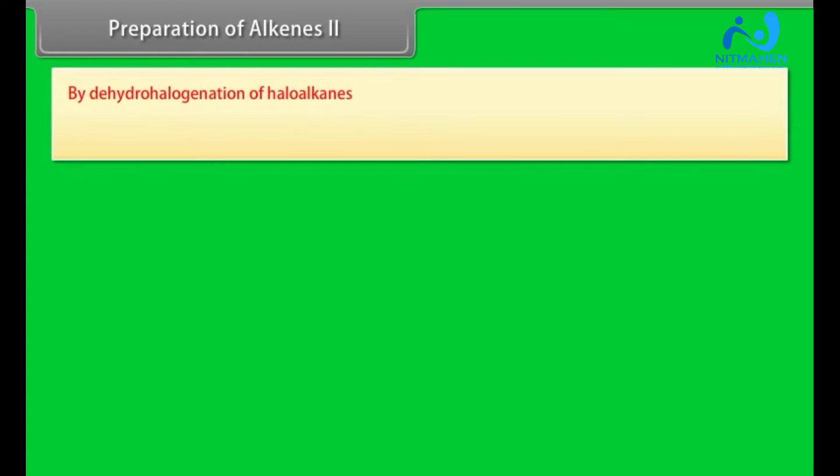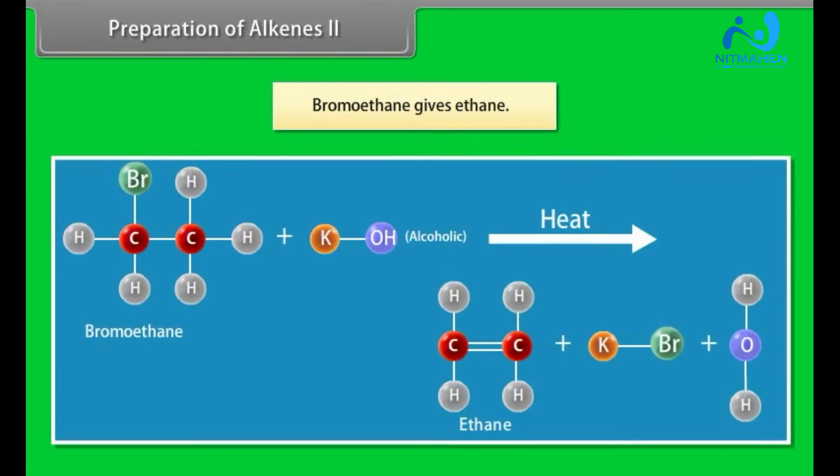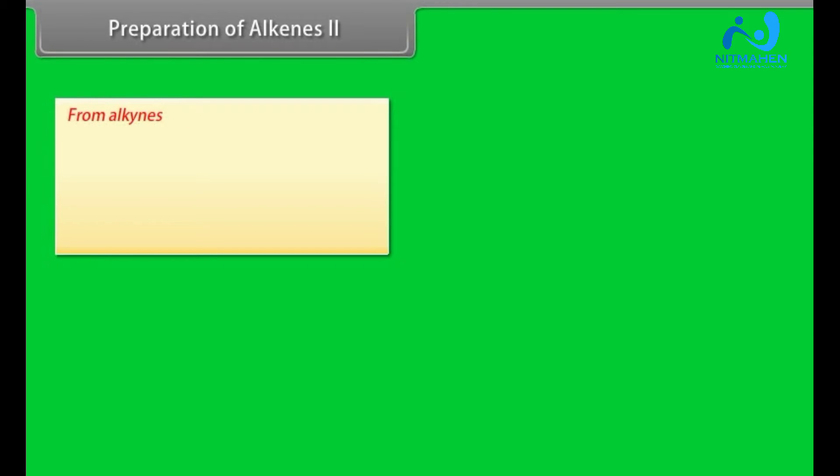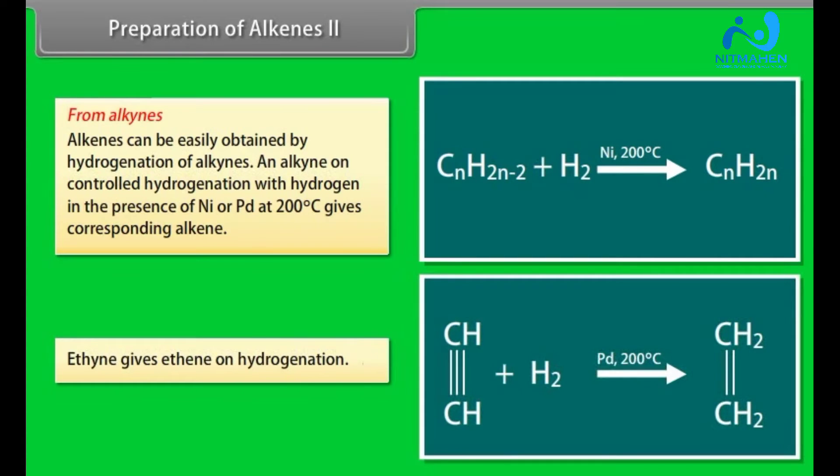Preparation of Alkenes Part 2. By dehydrogenation of haloalkanes. Haloalkanes on heating with alcoholic potash loses one molecule of hydrogen halide to give alkene. Bromoethane gives ethene. Dehalogenation. Vicinal dihalides, which are alkane molecules that contain two halogen atoms on adjacent carbon atoms, can form alkenes upon reaction with zinc. From alkynes. Alkenes can be easily obtained by hydrogenation of alkynes. An alkyne on controlled hydrogenation with hydrogen in the presence of Ni/Pd at 200 degree centigrade gives corresponding alkene. Ethyne gives ethene on hydrogenation.